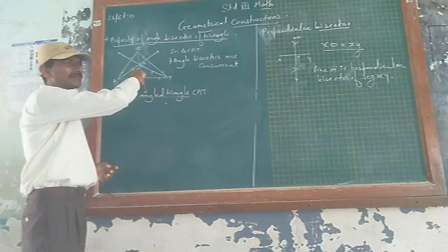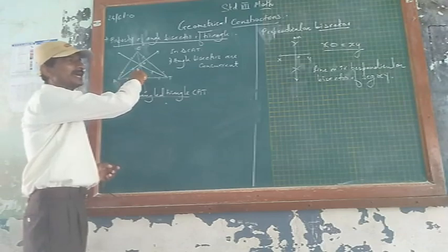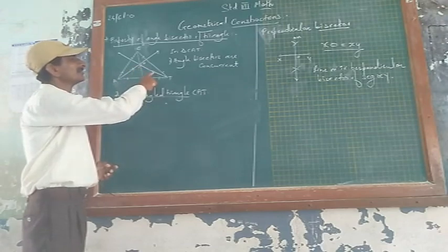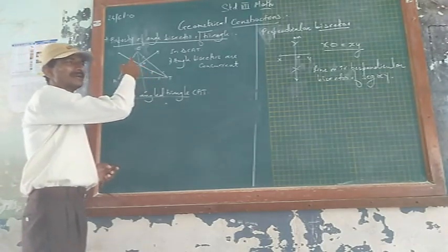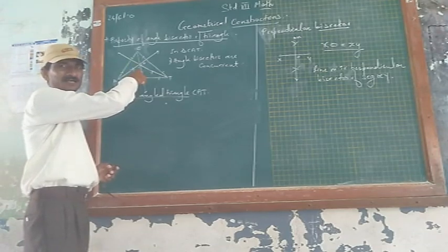All the time, you will get that in all the 3 types of triangle, you will find that the point of concurrence of angle bisectors will be inside the triangle. It will be inside the triangle.